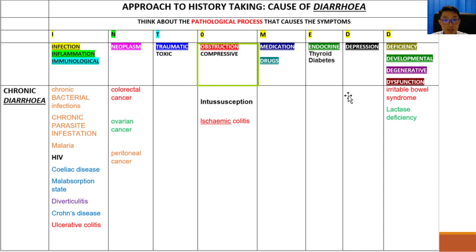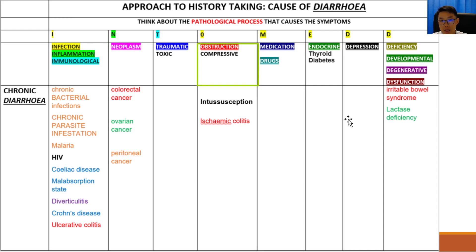Finally, irritable bowel syndrome and lactase deficiency both can cause chronic diarrhea. Irritable bowel syndrome usually presents with diarrhea after eating food rich in fermentable sugars, whereas lactase deficiency-associated diarrhea usually happens when someone drinks or eats food containing large amounts of lactose.